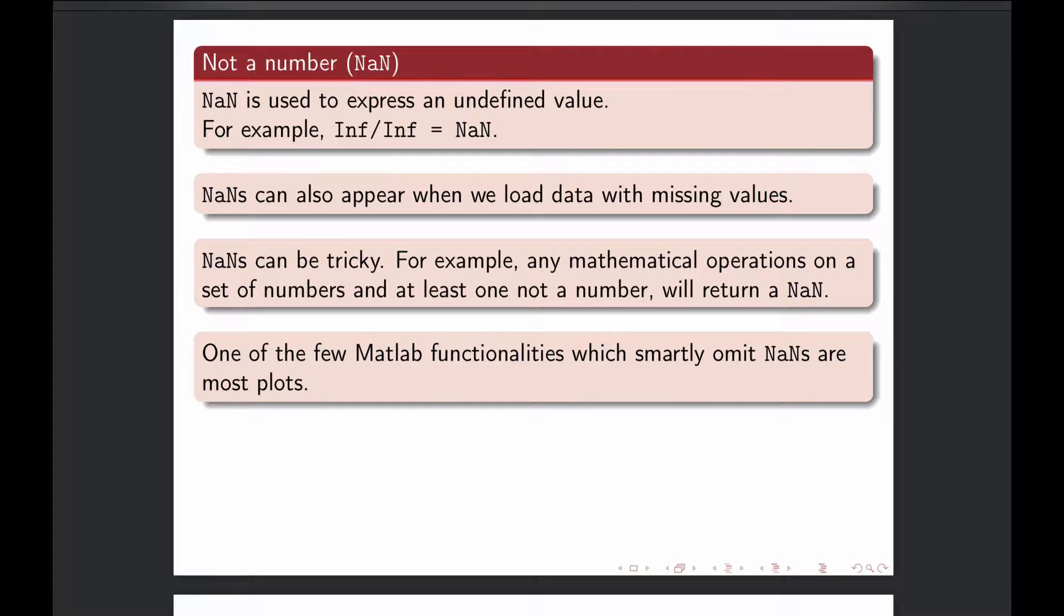For instance, mean value of a vector with a bunch of actual numbers 1, 2, 3, but then one NAN somewhere in the middle. The mean value of that will be a NAN, sum of that will be a NAN, and many other operations will be NAN.